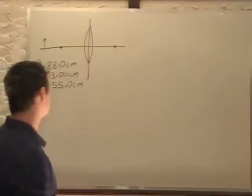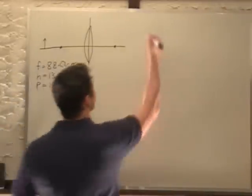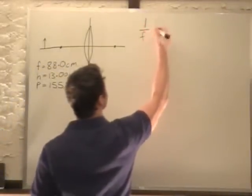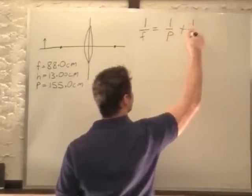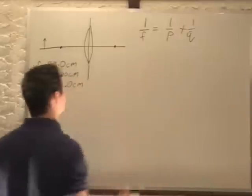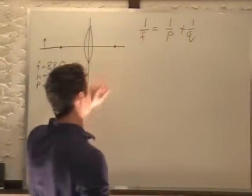So if we start with our formulas, we have 1 over F equals 1 over P plus 1 over Q, where F is our focal length, P is our object distance, and Q is our image distance.